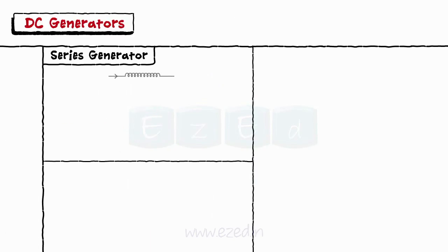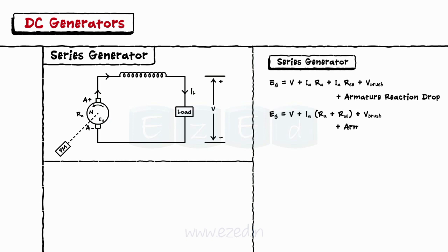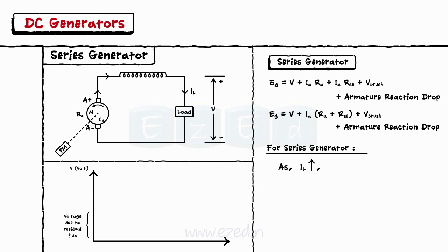When field winding is connected in series with the armature winding while supplying the load, the generator is called as the series generator. For the series generator, we also did drop across the series field winding while finding the EMF equation. Unlike the shunt characteristics, for the series generator, the load voltage V increases as the load current increases.